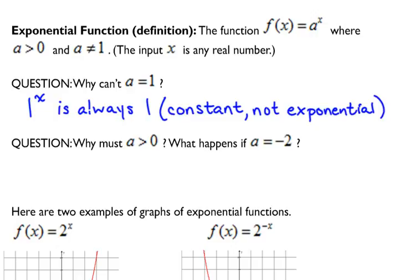Second question. They also say not only can a not be 1, a has to be greater than 0, a has to be positive. Why? Why is that? To help you figure that out, what happens if a is negative 2? Let's just start thinking about some output values.